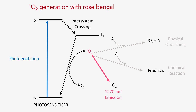Singlet oxygen can react with a target, for example cancer cells in photodynamic therapy, or it can emit luminescence at 1270 nanometers as it relaxes back to the ground state. One of the goals of photodynamic therapy is to find efficient photosensitizers that can produce a high yield of singlet oxygen. The best way of characterizing this is to directly measure the emission at 1270 nanometers.